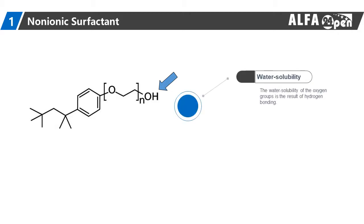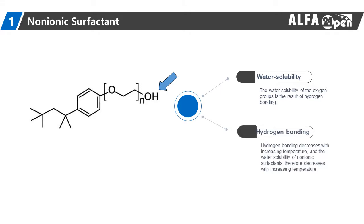Non-ionic surfactants have covalently bonded oxygen-containing hydrophilic groups which are bonded to hydrophobic parent structures. The water-solubility of the oxygen groups is the result of hydrogen bonding. Hydrogen bonding decreases with increasing temperature, and the water-solubility of non-ionic surfactants therefore decreases with increasing temperature.